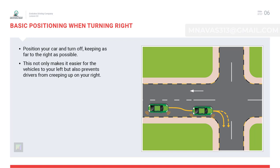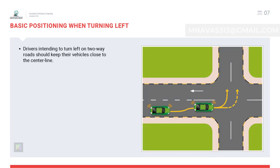Basic positioning when turning right: whenever you intend to turn right at a junction, you will have to move towards the right so that you can show your intentions through your positioning to other road users.